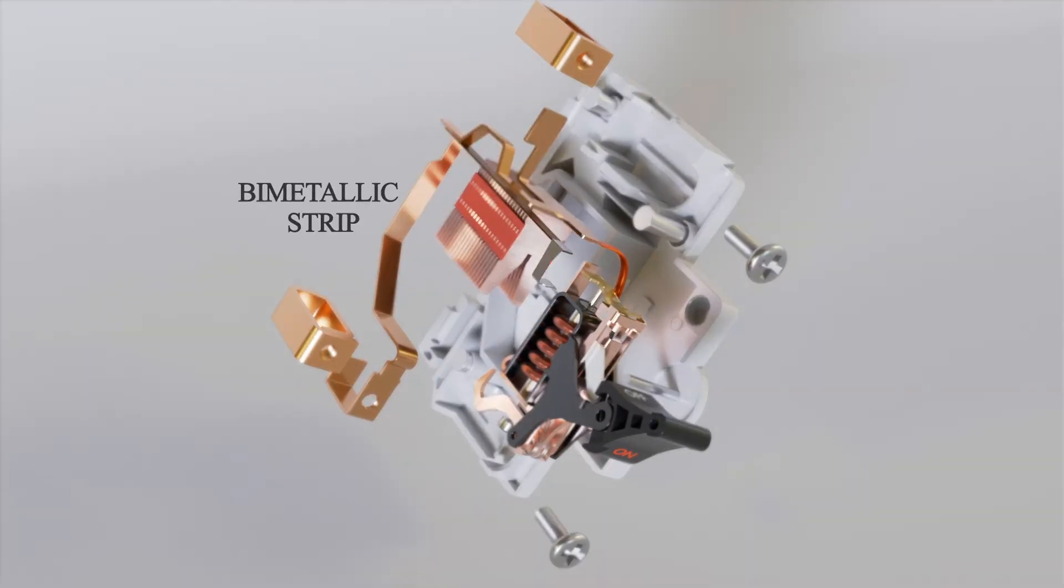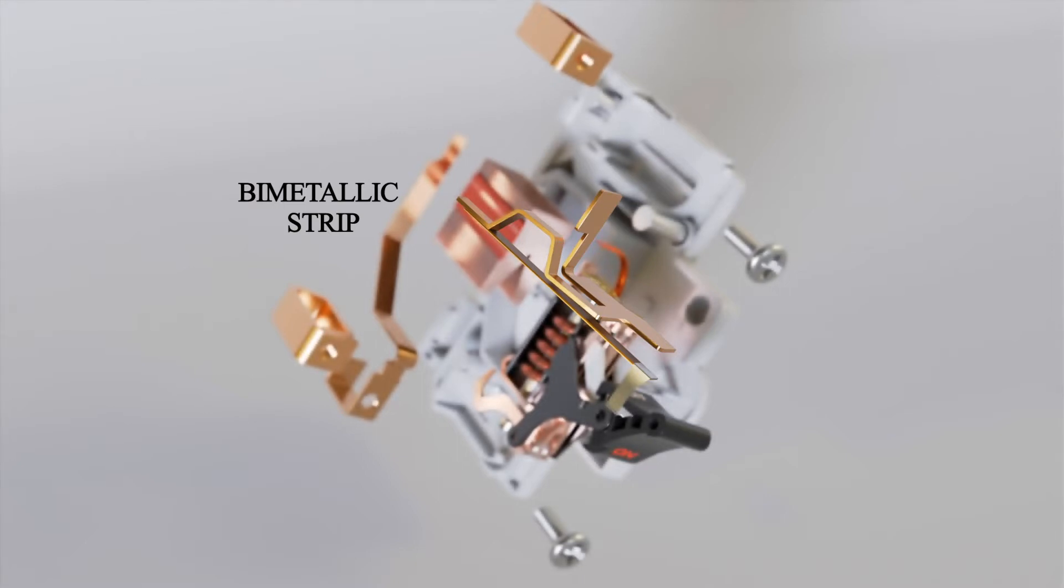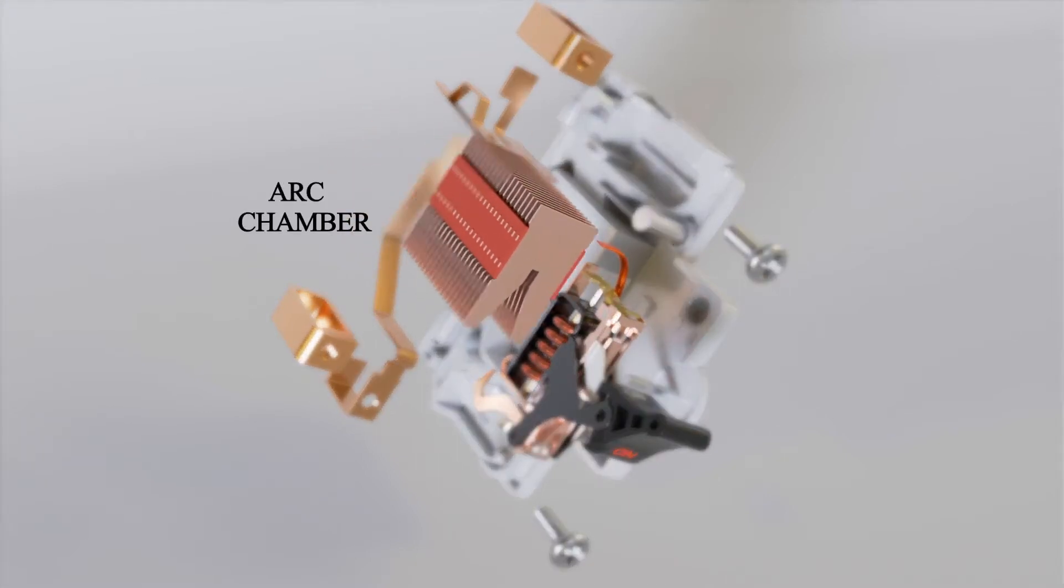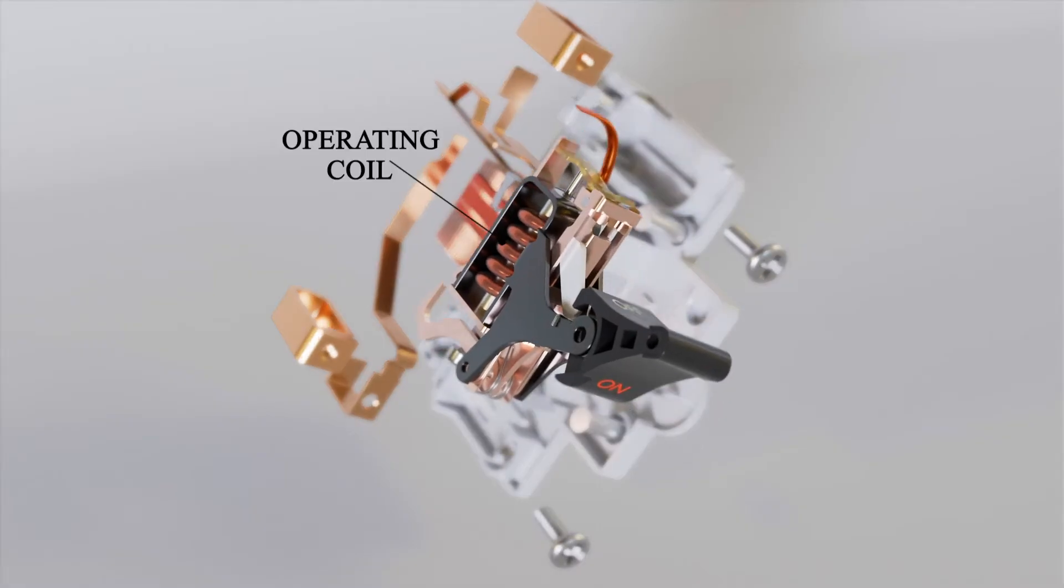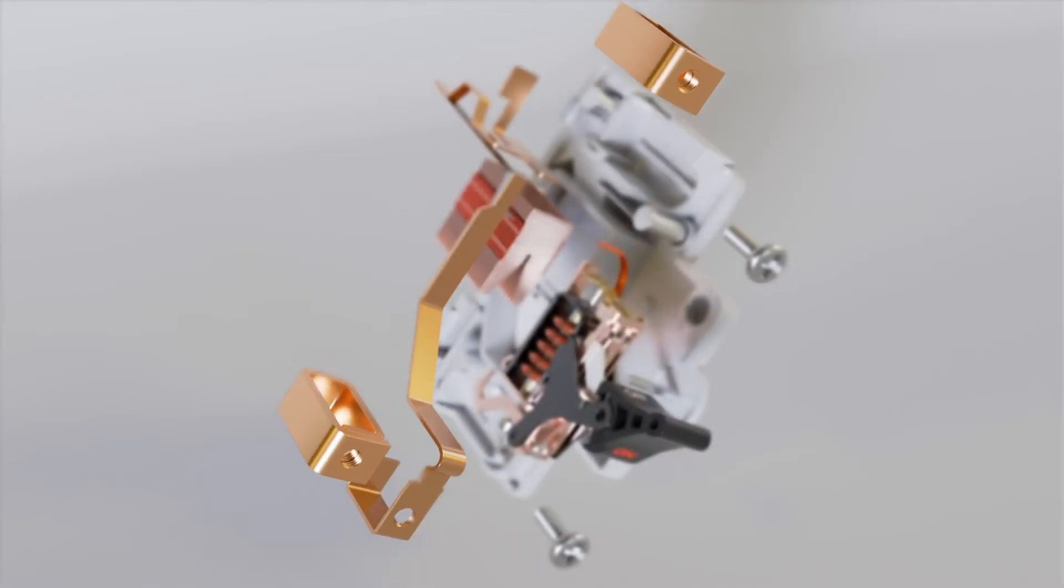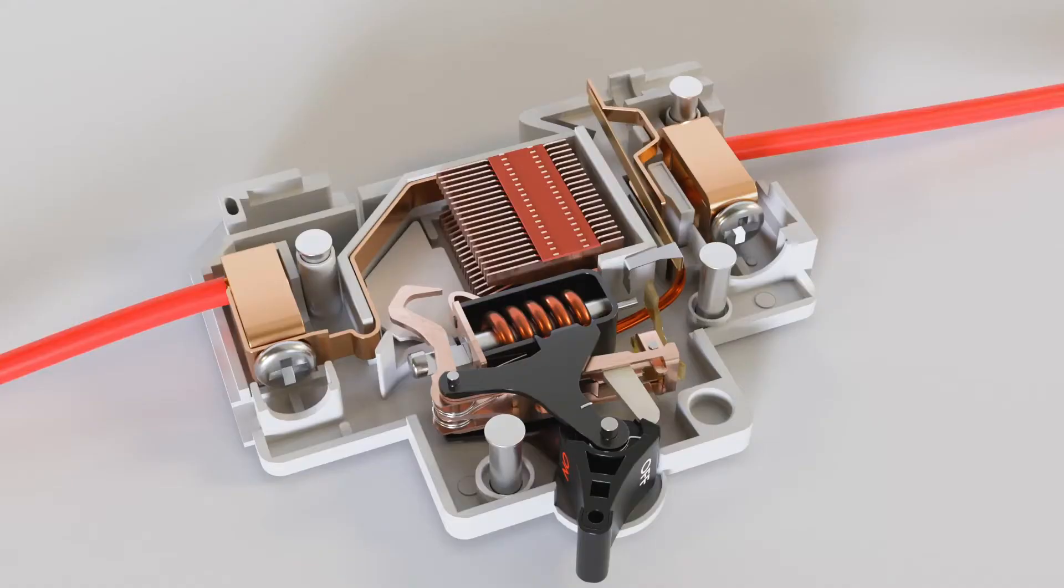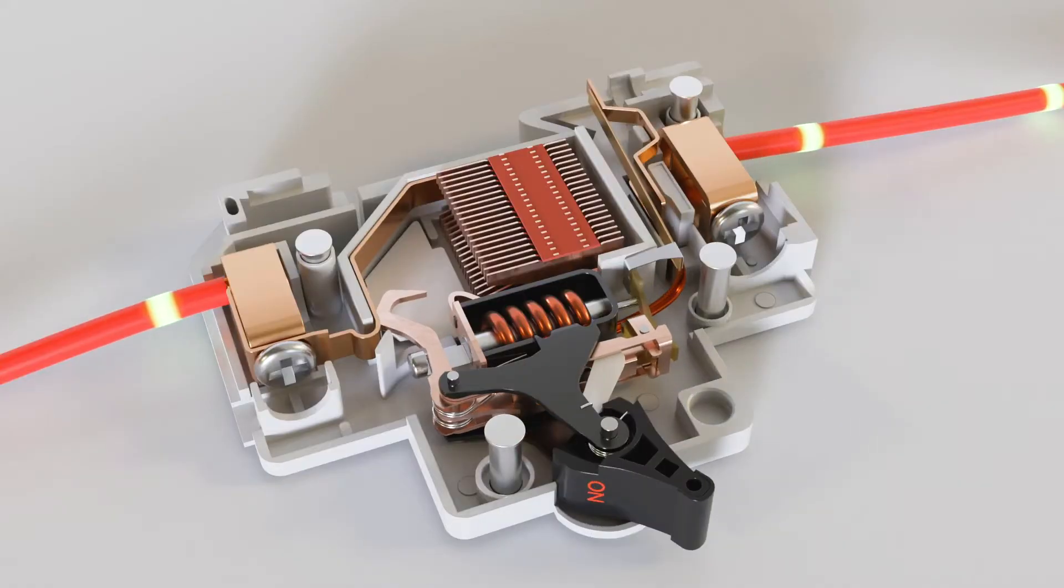First section consists of bimetallic strips. Second section is the arc chamber. Third section contains electromagnetic coil and operating mechanism. And the fourth one houses the connectors. As we discussed earlier, an MCB is always connected in series with the phase wire.